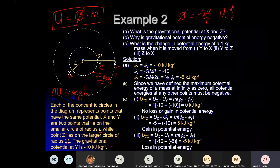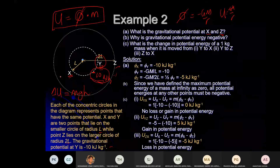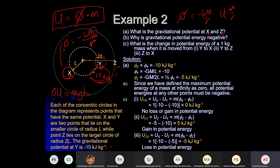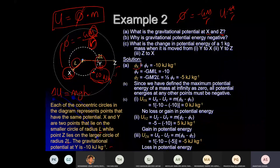What is the gravitational potential at X? Since X and Y are on the same planet and both are at distance L from the center, they have the same R and same M. So φ = –GM/r is the same for both — φ_X = –10 kJ/kg as well.